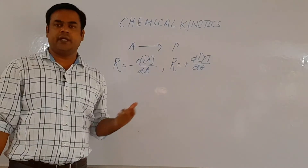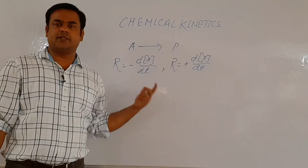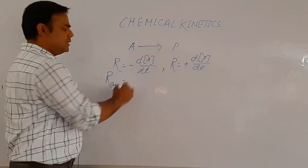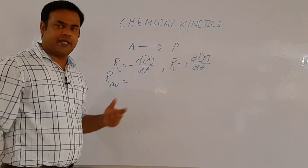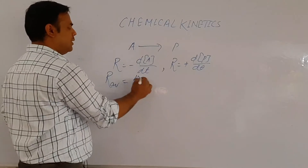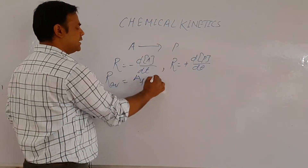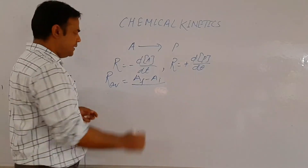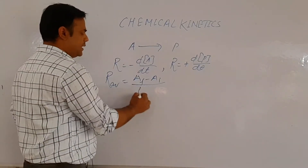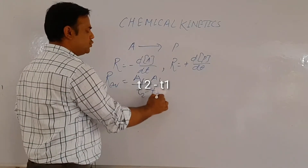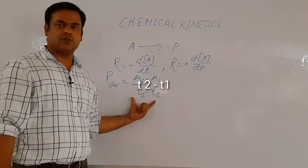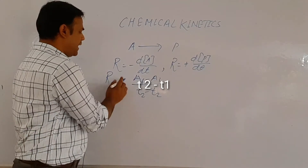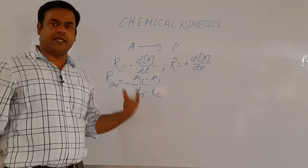There are two types of rate: instantaneous rate and average rate. Average rate equals final concentration of reactant minus initial concentration of reactant, divided by time interval T2 minus T1. This gives the average rate of reaction, with a negative sign.